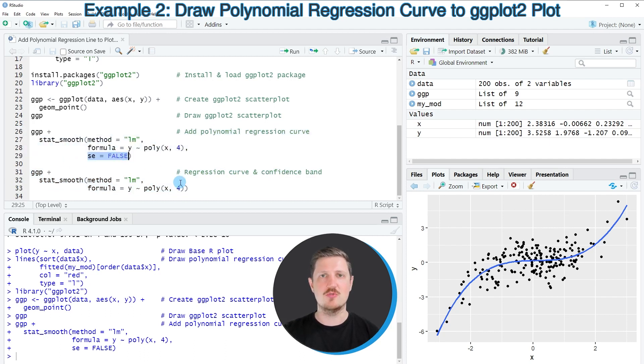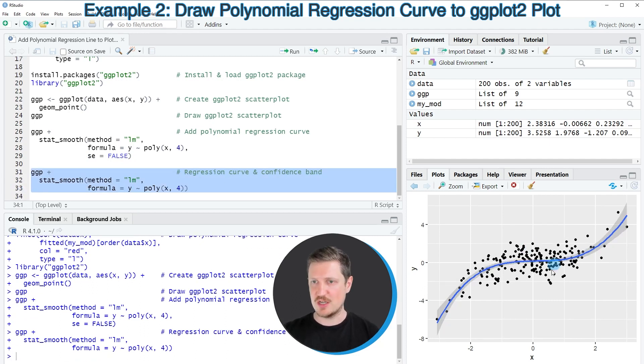However, this time I'm not using the se argument. And if we run these lines of code, you can see that at the bottom right our plot is updated once again. And this time our polynomial regression line is shown with standard errors.